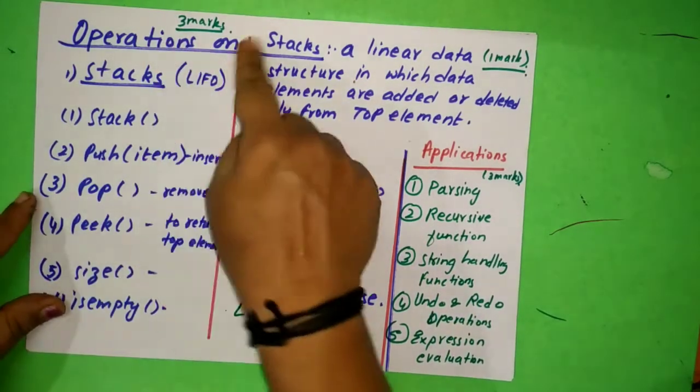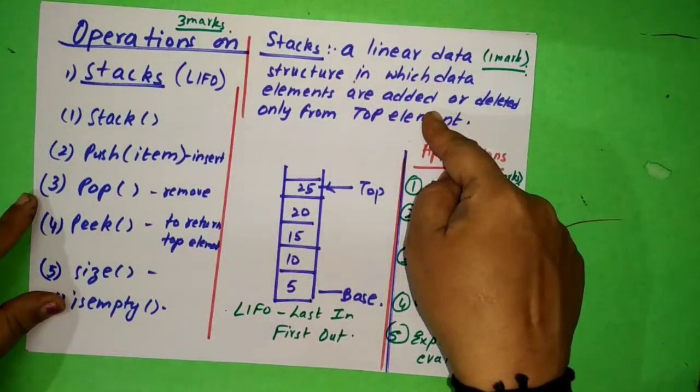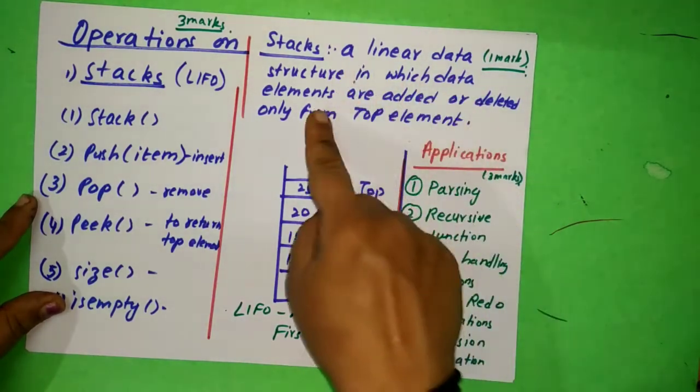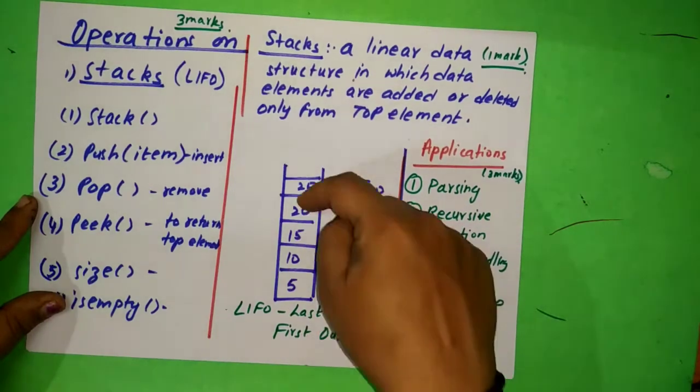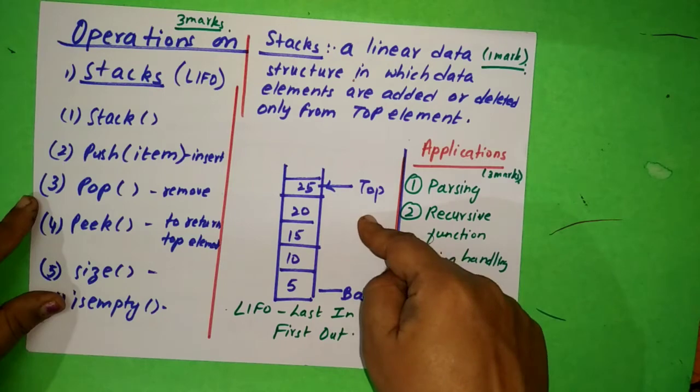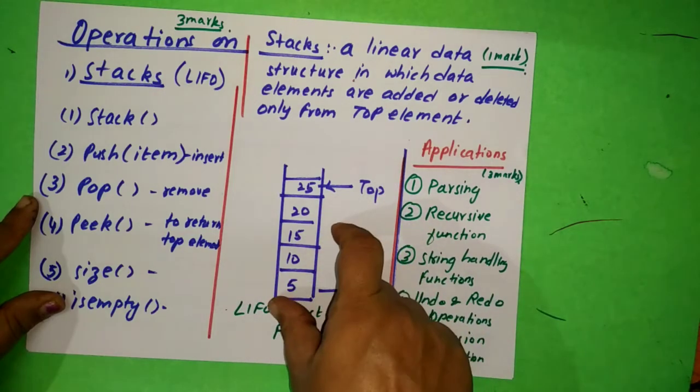And then these are the operations on stacks. These are asked for one mark. Like stack's definition is asked: a linear data structure in which data elements are added or deleted only from the top element. So you have the stack like this - this is the base of the stack and this is the top of the stack. Remember this diagram whenever you're learning about stacks.